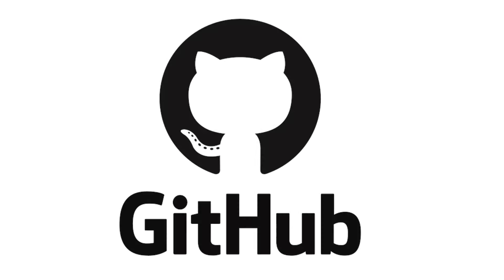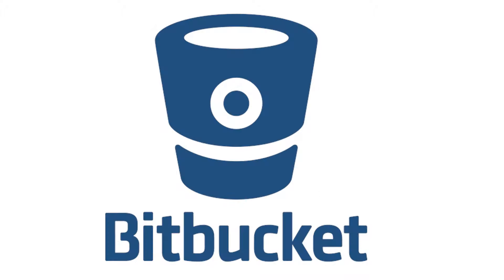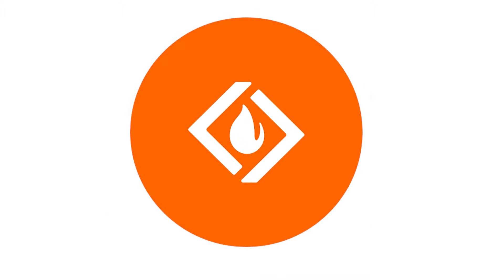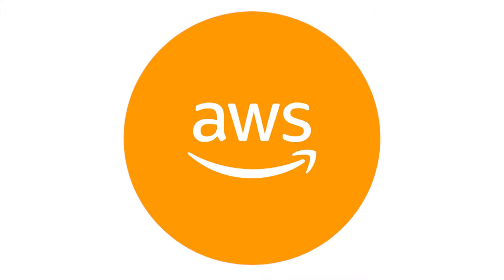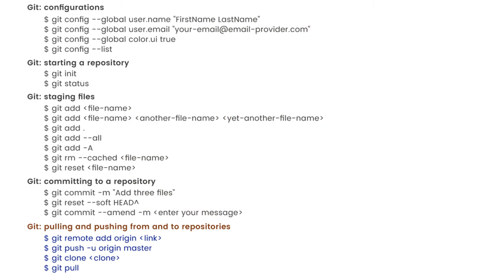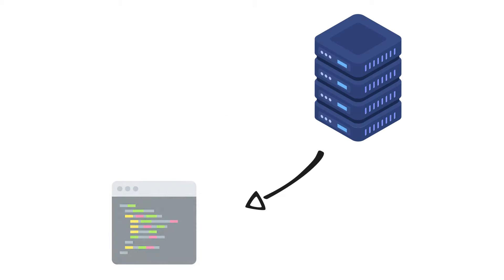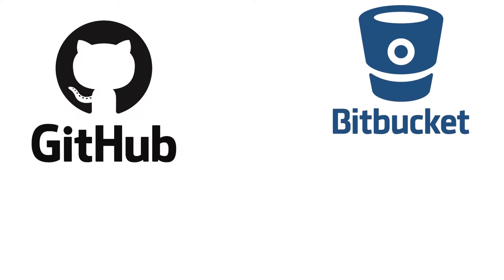There are a lot of different Git remote hosts that allow you to store your code repositories. When it comes to using Git, it makes no difference which host you use. Pulling and pushing code, for example, is exactly the same. Two of the big hosts for Git are GitHub and Bitbucket.